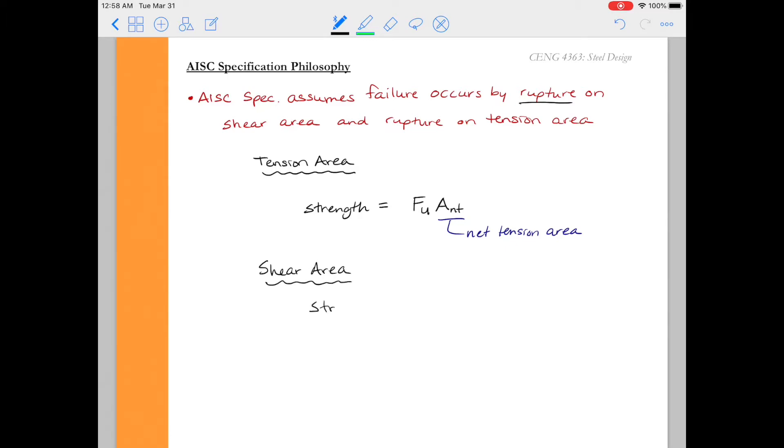For shear area we also are going to define the strength. And again because we're looking at rupture we're looking at the ultimate stress in shear. And so I'm just going to call this F sub UV. So this is the ultimate stress of the material when it's in shear. And then like the tension area we're going to multiply this by the net area in shear. And the little v typically will refer to shear when we're looking in the specification. Let's go ahead and add some notes on these particular variables so that we remember what they are.